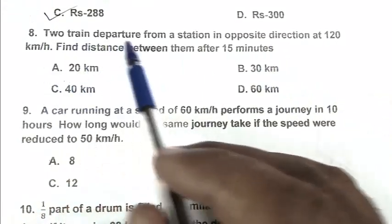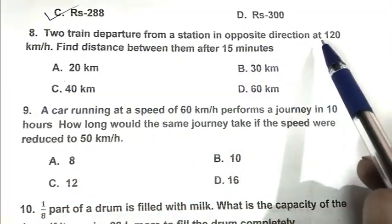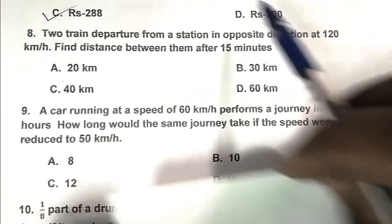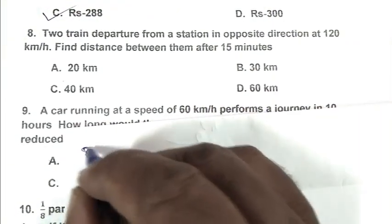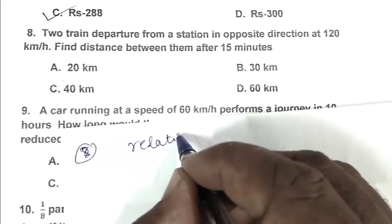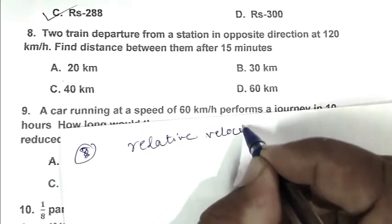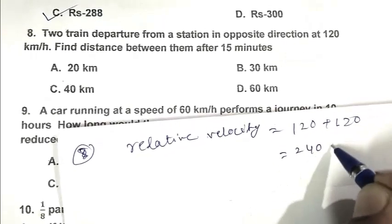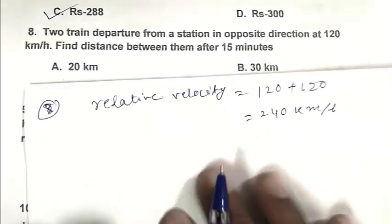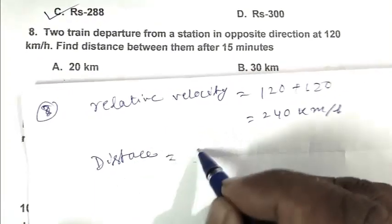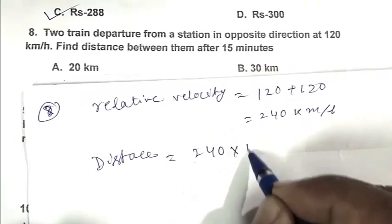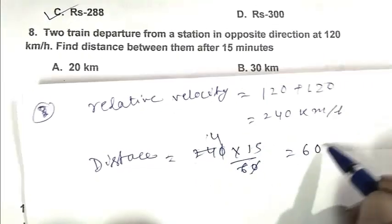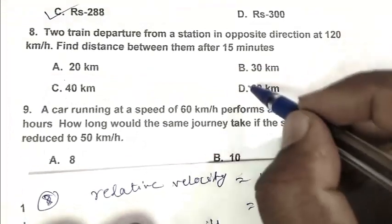Question number 8: Two trains depart from a station in opposite directions at 120 km/h. Find the distance between them after 15 minutes. So friend, relative velocity is 120 plus 120, that is 240 km/h. So distance is 240 multiplied by 15 upon 60, which is 60 km. So D is the right answer.